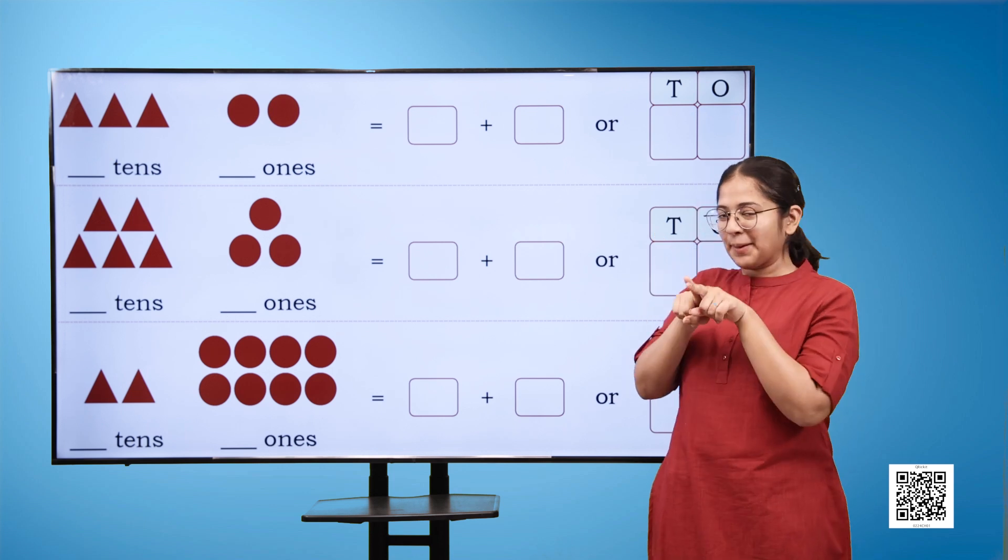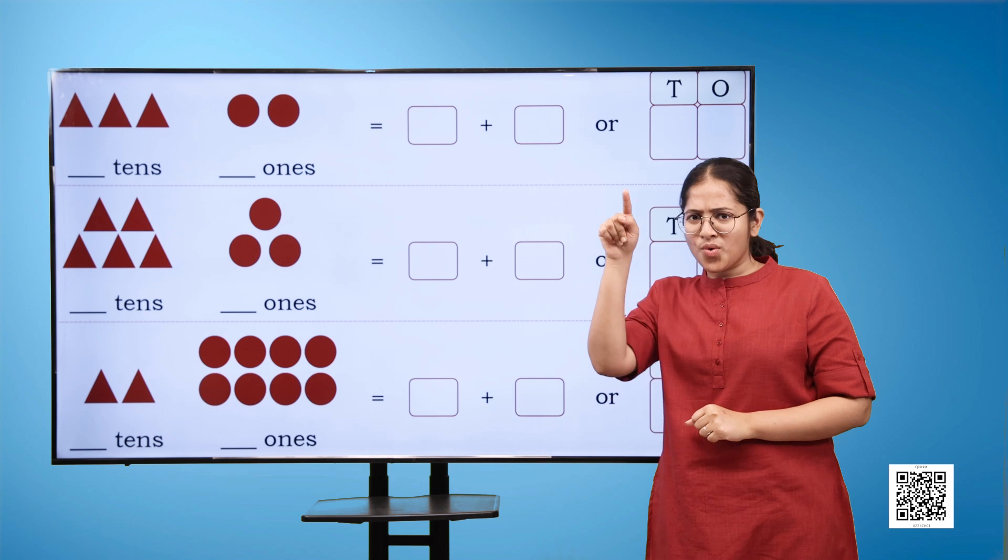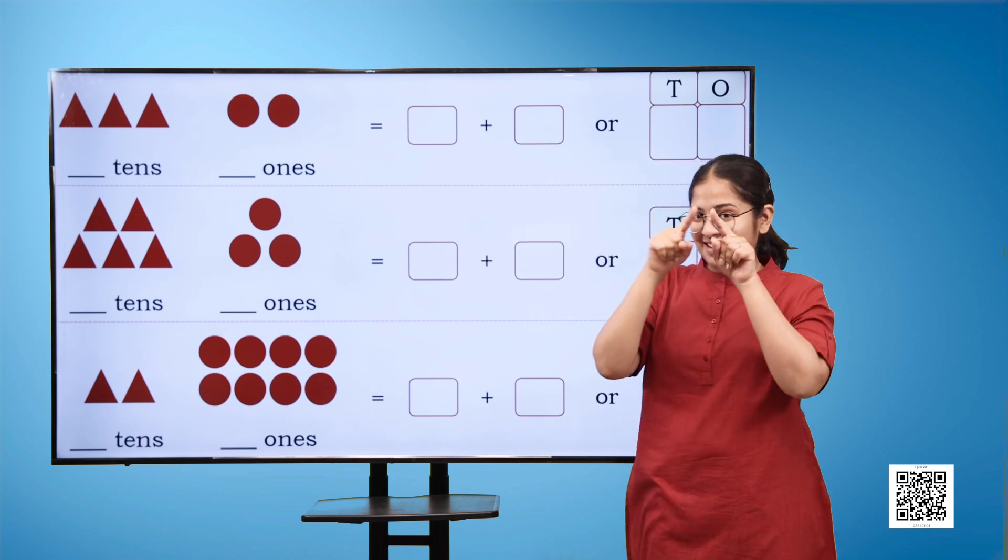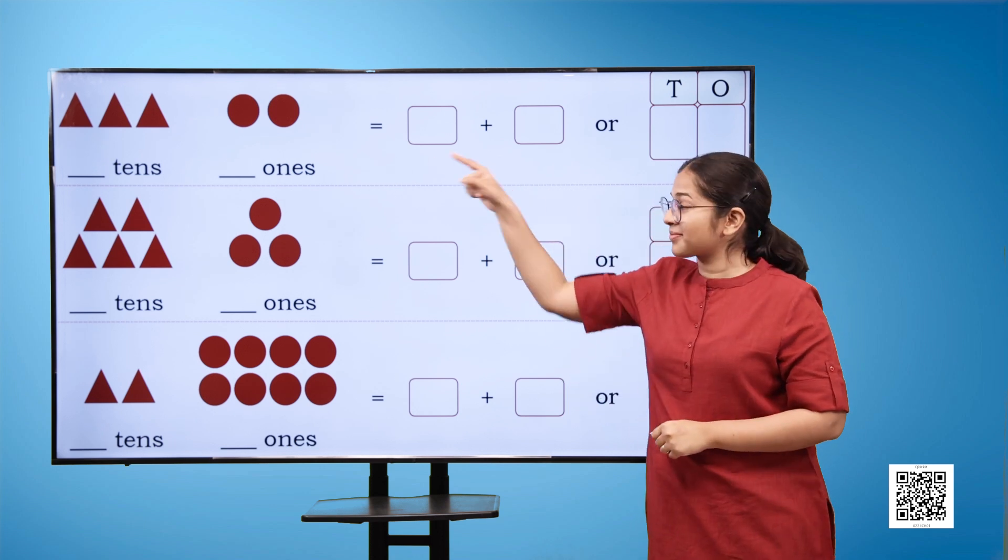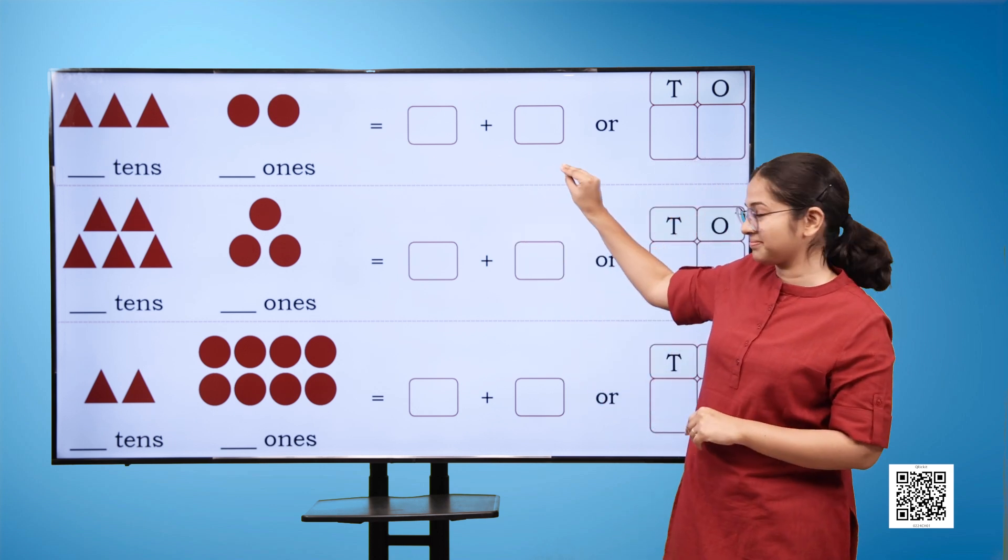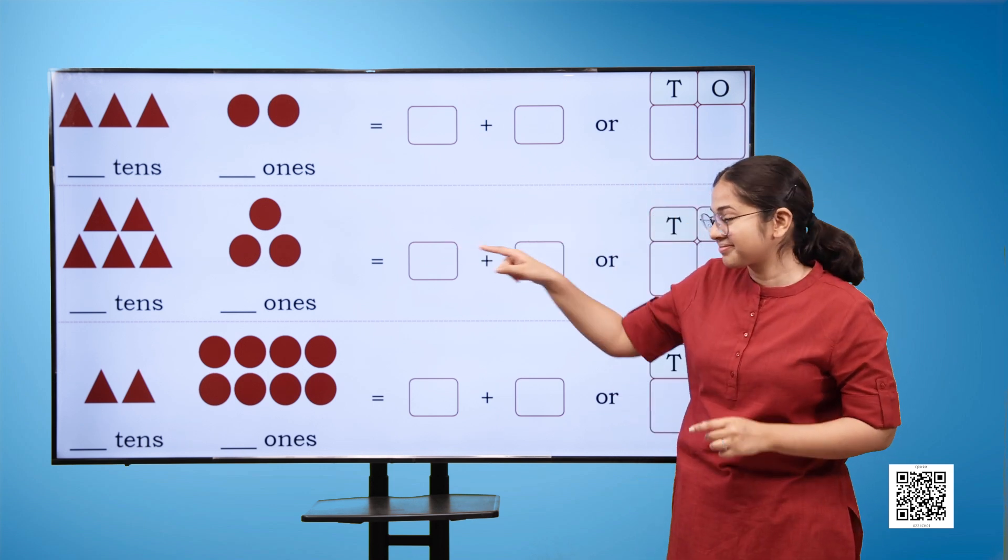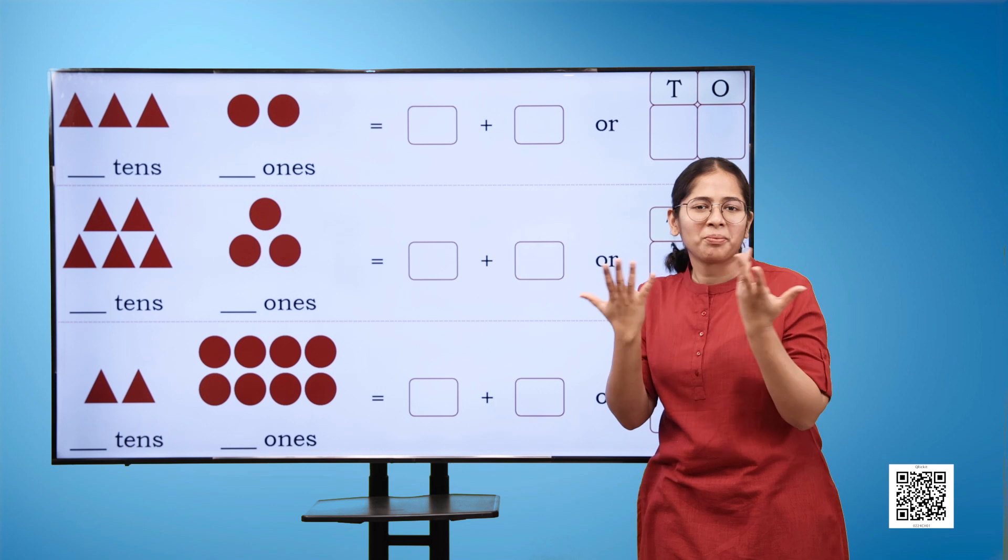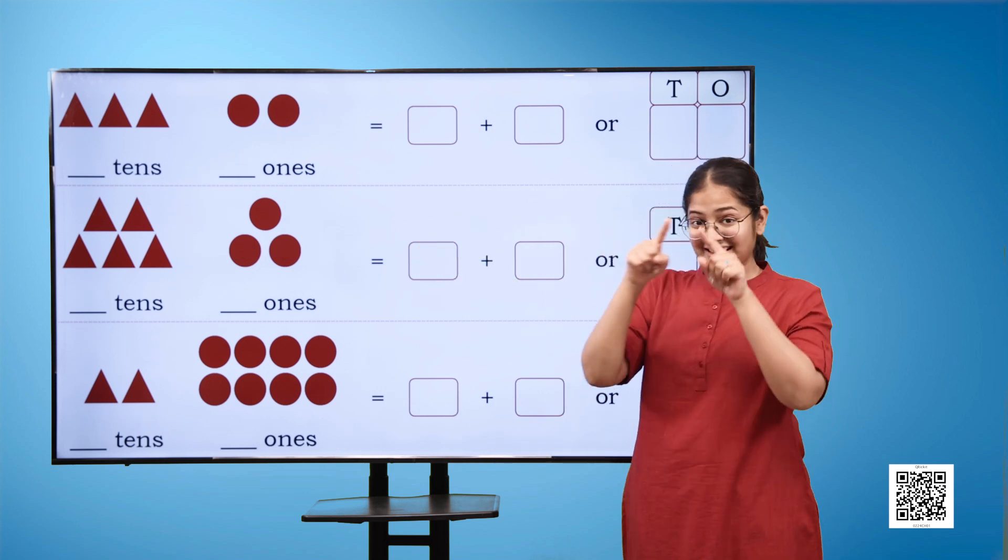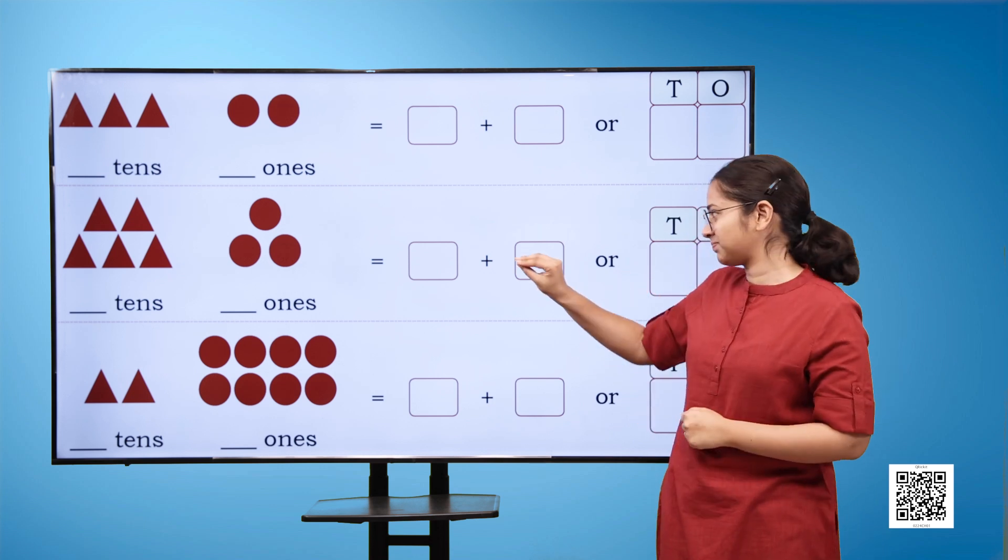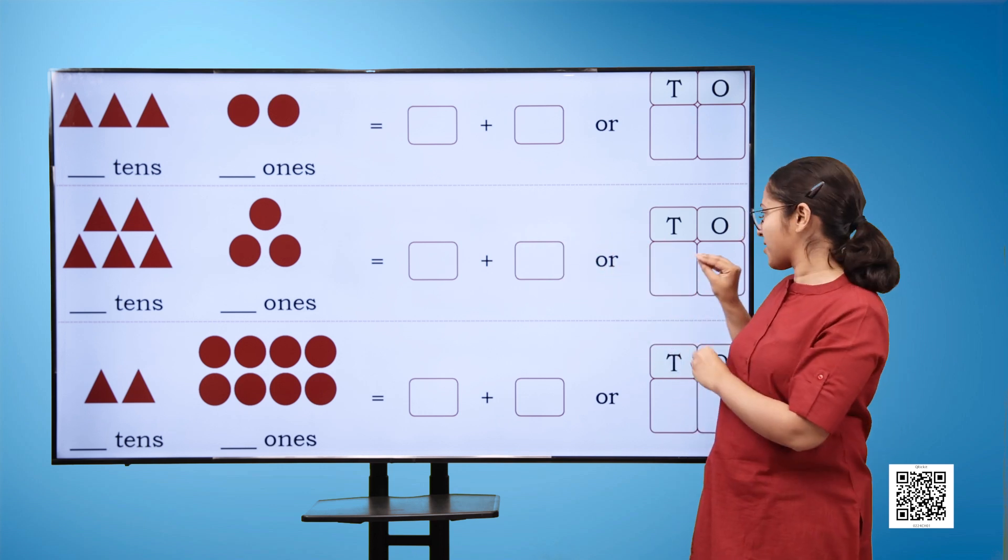Three brown triangles blank tens, two brown circles blank ones, is equal to blank plus blank or T blank O blank. There are five brown triangles blank tens, three brown circles blank ones, which is equal to blank plus blank or T blank O blank.